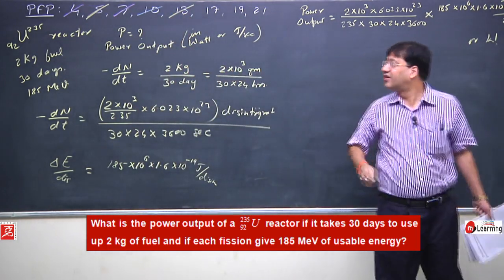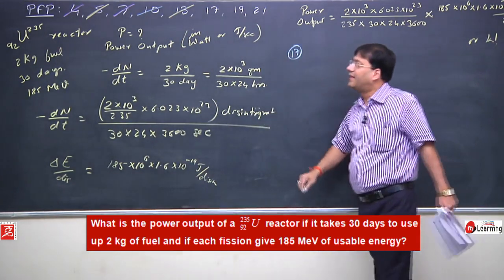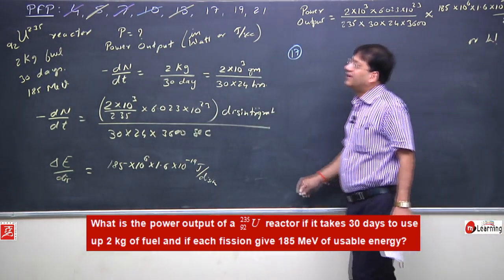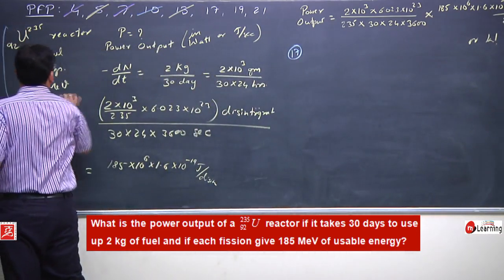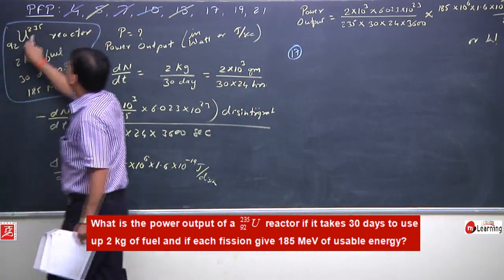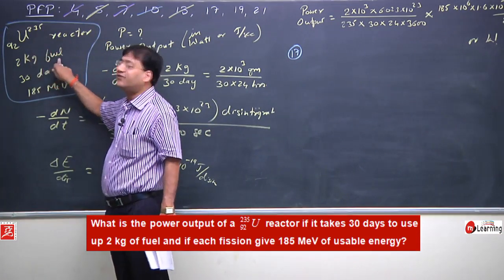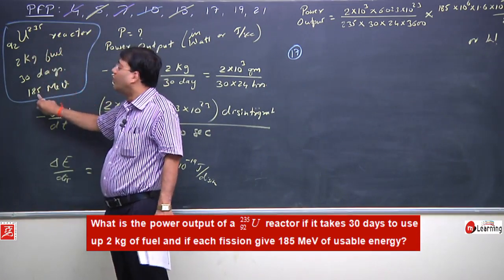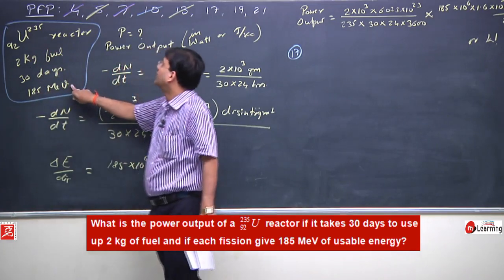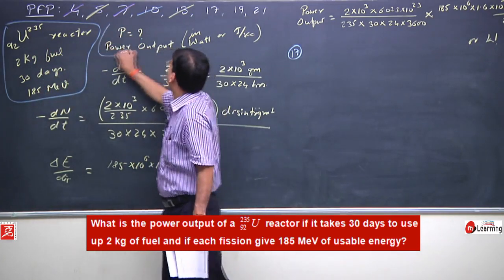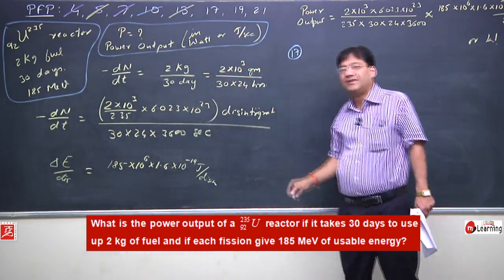Here the power output has been obtained. After this I will solve the 17th problem. This was the data given: Uranium-235 reactor with atomic weight 235, 2 kg fuel is used in 30 days, and each uranium fission releases 185 MeV. Power output is asked, and power output is always given in watts, i.e., joules per second.